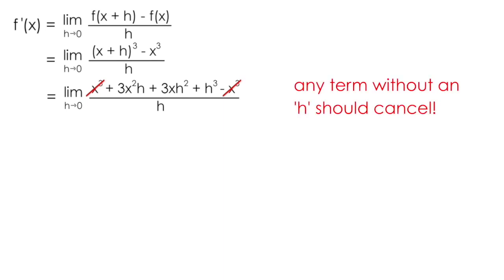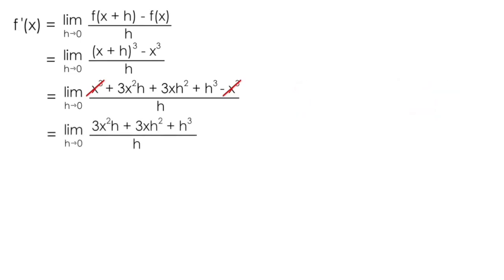Any term without an h should cancel, and if it doesn't, you've made a mistake. So you'll notice that the only terms left have an h. And if each term I'm looking at here has an h in common, I can factor out an h and produce this expression. We know h divided by h is 1, so I can essentially cancel out those h's, massively simplifying to 3x² + 3xh + h².